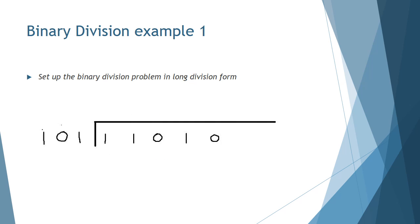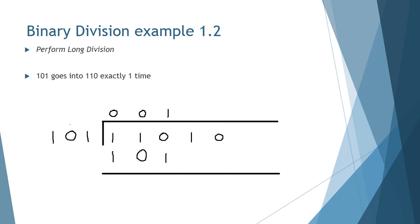So in this example, the dividend is 1-1-0-1-0 and the divisor is 1-0-1. So the first thing we do is say, how many times can 1-0-1 go into 1? When we ask that question, we get 0. And so that is added to the quotient.